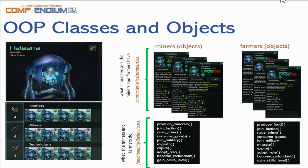So how can we best describe our characters on the planet's surface — our population of farmers, miners and technicians — in terms of the object-oriented paradigm? Miners and farmers can be described in terms of two key components. The first is a set of characteristics and properties, which are essentially variables being assigned values. Secondly, we have a set of functions which enable our characters to do things — for example to produce minerals, to join factions, to raise crime, to consume goods. We describe those typically in the object-oriented paradigm as behaviours.